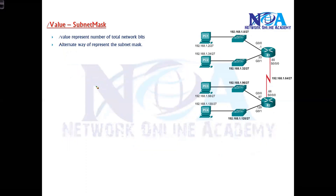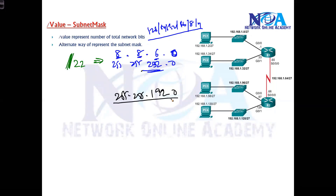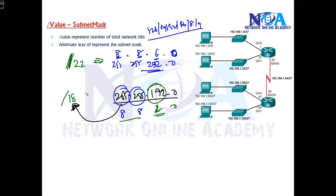Whenever you see a slash value, you should be able to write the equivalent subnet mask. For example, /22 means 8+8+6 = 22, so the subnet mask is 255.255.252.0 — because 6 bits means 252. Similarly, whenever you see a subnet mask like 255.255.192.0, you need to find the slash value: 8+8+2 = slash 18. You should know both conversions and be able to go from slash value to subnet mask and vice versa.